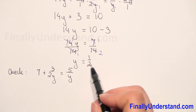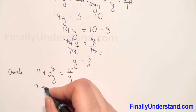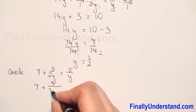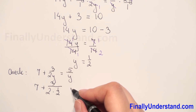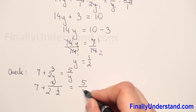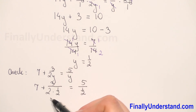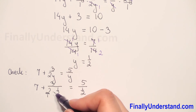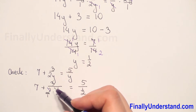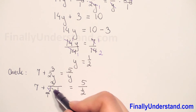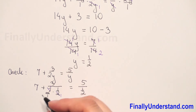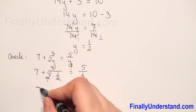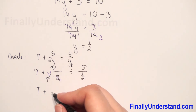Now we substitute y by 1 over 2. So we have 7 plus 3 over 2 times 1 over 2. We rewrite 2 as 2 over 1, and when we multiply the fractions, numerator times numerator and denominator times denominator, we can cancel out the 2, leaving 1 only. So on the left side we have 7 plus 3 over 1, which is 7 plus 3 equals 10.